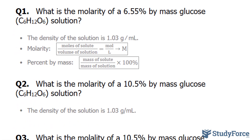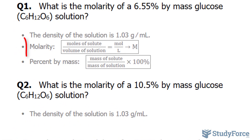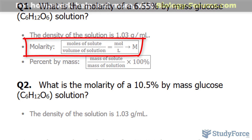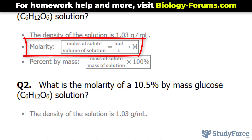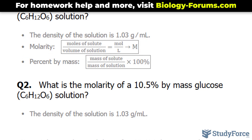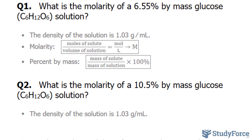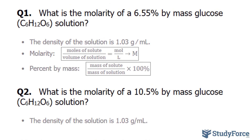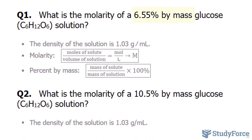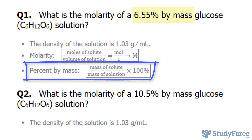Now before we start answering this, remember what molarity is. Molarity is a comparison of the moles of the solute per the volume of the solution. The final units of molarity should be in moles per liter, and it's represented by this capital letter M. On the contrary, we've been given the percent by mass, and the formula for percent by mass is shown underneath.